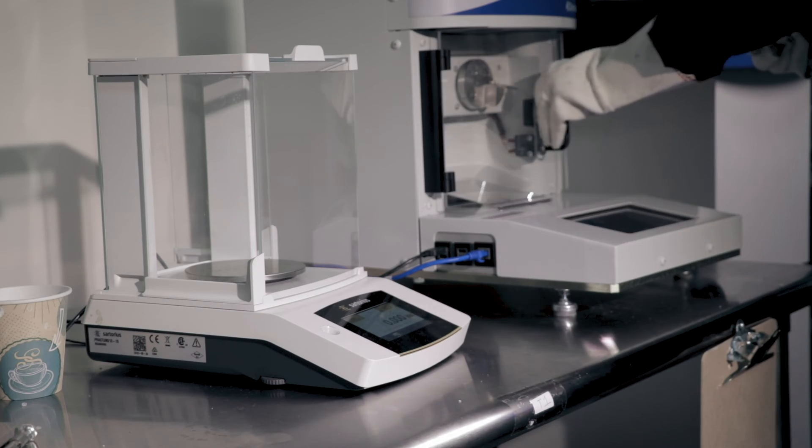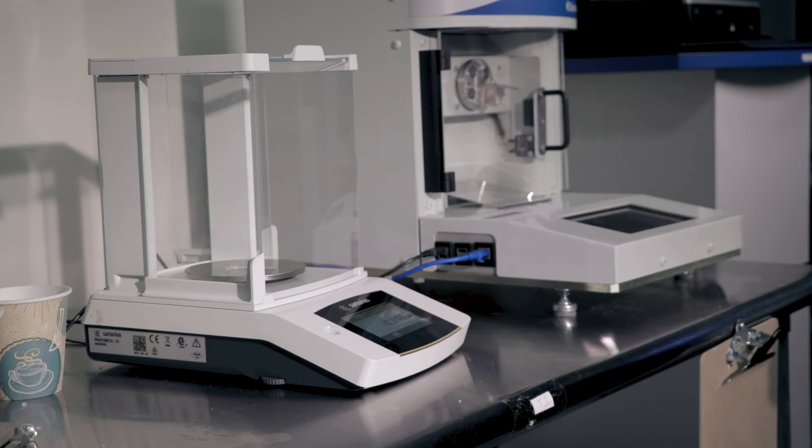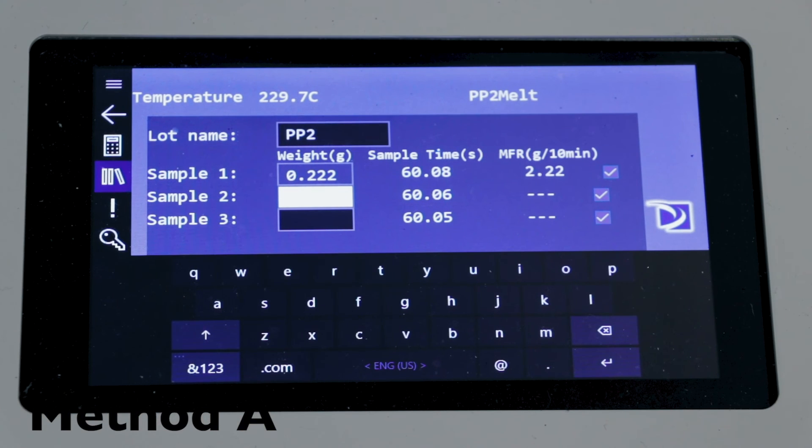The sample is placed on the scale to capture the actual weight in grams to the third decimal point. Enter the weight into the user interface and press the advance button to observe the calculated melt flow rate. The weight of the sample has been divided by the cut time.